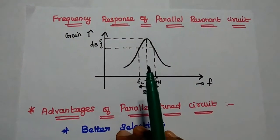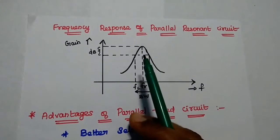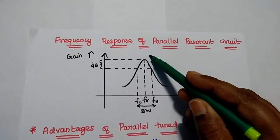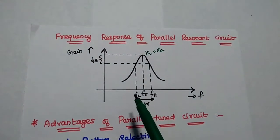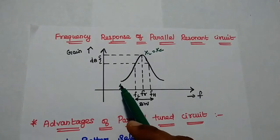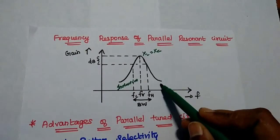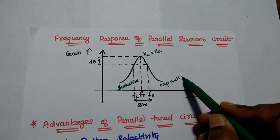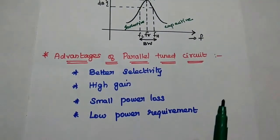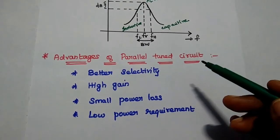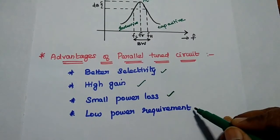This is the frequency response of the parallel resonant circuit. At resonant frequency, XL equals XC, and at that point we get the maximum value. If the frequency is less than the resonant frequency, the circuit acts as an inductive reactance. If it is greater than the resonant frequency, it acts as a capacitive reactance. The advantages of a parallel tuned circuit over a series tuned circuit are: better selectivity, high gain, small power loss, and low power requirements.